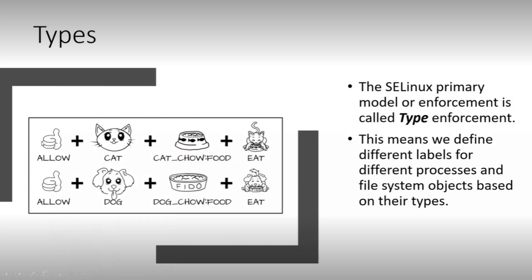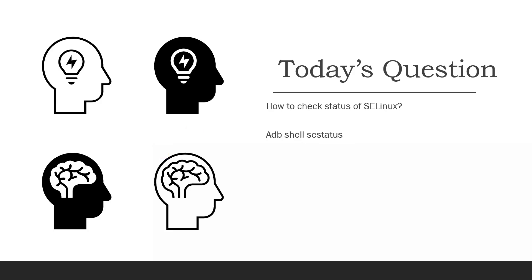Think of these as two different types of files: without proper policies, one file type could access or modify the other. I want the cat to eat only cat food and the dog to eat only dog food — meaning I want each file to only access and modify its own class. By writing these policies with specific permissions like 'eat', we precisely control which domain can access which type. This pictorial example illustrates how SELinux policies work.